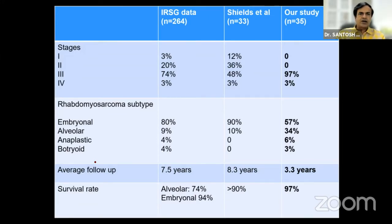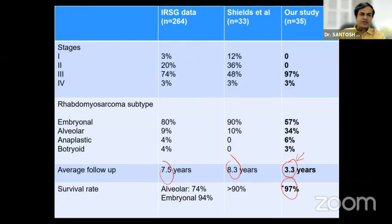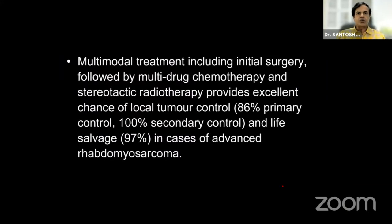In conclusion, multimodal treatment — including initial surgery guided by the extent of the tumor with an aim to preserve function of the eye rather than complete removal, followed by multi-drug chemotherapy combining VAC and IE alternating, and stereotactic radiotherapy — provides an excellent chance of local tumor control and life salvage in cases of advanced rhabdomyosarcoma.